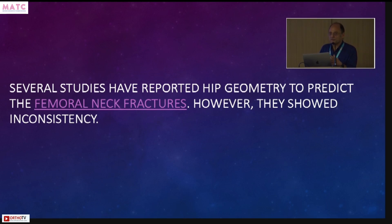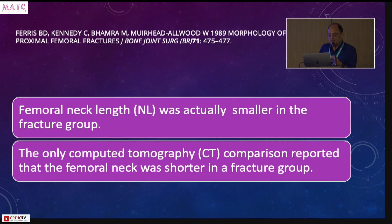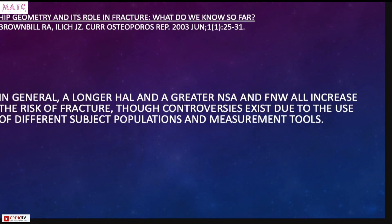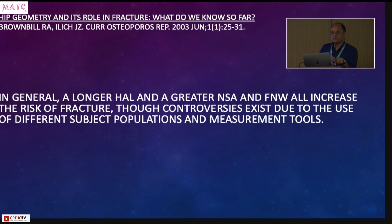However, all of these studies show inconsistency. Neck length was actually smaller in the fracture group in earlier studies, and subsequent comparisons also reported it was shorter in the fracture group. But as we move forward in the literature towards the present, this is being neutralized — it is now said that it doesn't really hold true, and that the full hip axis length is a more important predictor of fracture than pure neck length.